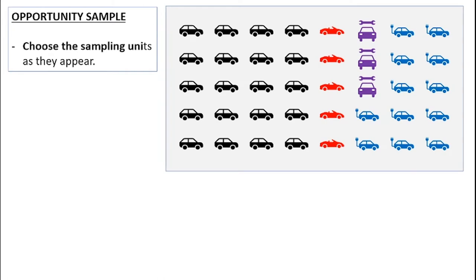Now opportunity sampling is also known as convenience sampling, just in case you see that written anywhere. This is a type of sampling where the individuals that are chosen to be part of the sample, the sampling units that we choose, we just choose them based on opportunity, we just choose them based on convenience, we just choose them because they're there, they're right in front of us.